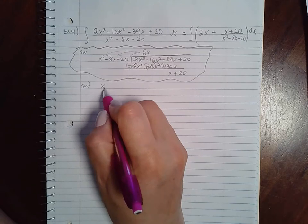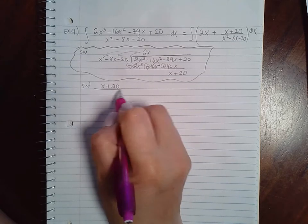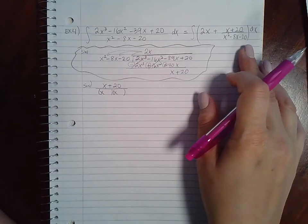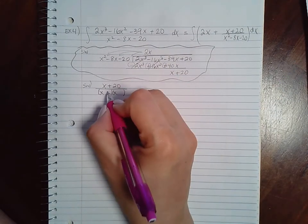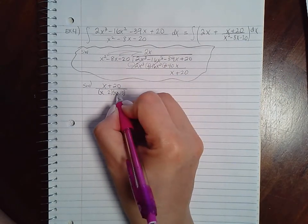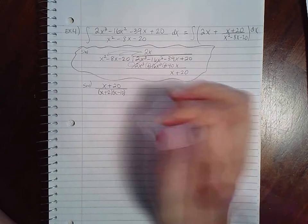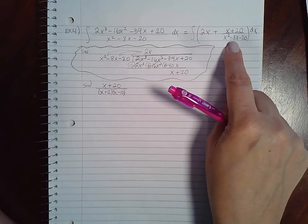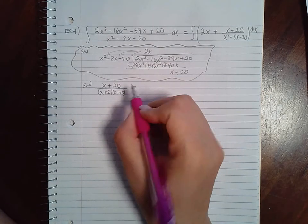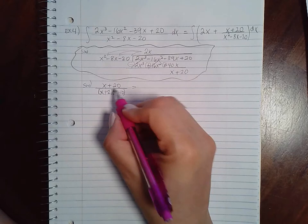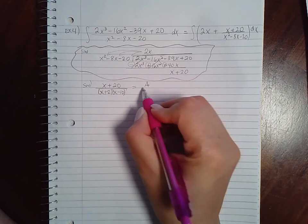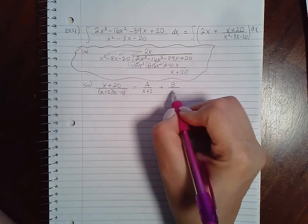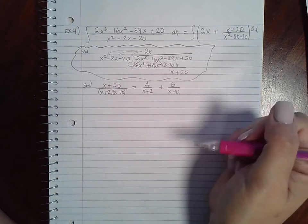If I factor that denominator, it will be 20 is 2 and 10. 10 would have to be negative and 2 positive, so that it multiplies to give me negative 20, and combines to give me negative 8. So we have two linear factors, both with the power of 1, which means I just need one constant over x plus 2, and one constant over x minus 10.